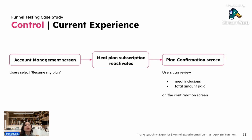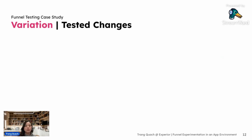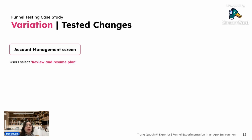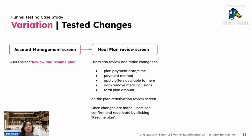Knowing this, we proposed a new experience with these test changes. On the account management screen, the label of the call-to-action is changed from 'Resume Subscription' to 'Review and Resume Plan.' After users click on 'Review and Resume Plan,' they are taken to a new screen where they can review what they're reactivating — make changes to plan payment days and time, payment method, apply any available offers, and add or remove meals for that week or month — along with the total amount they will pay. Once these changes are made, the user can simply reactivate their plan.